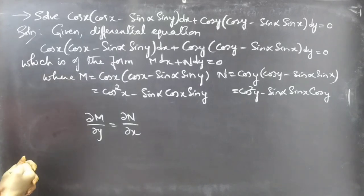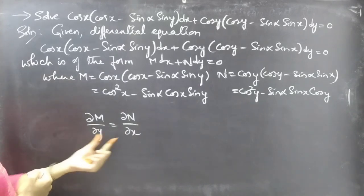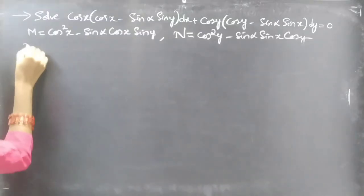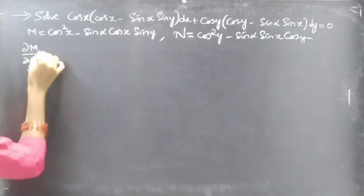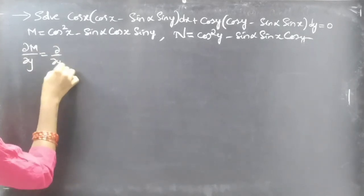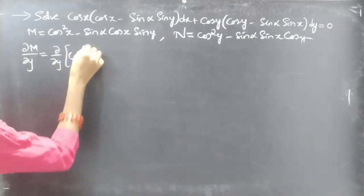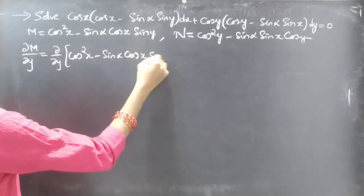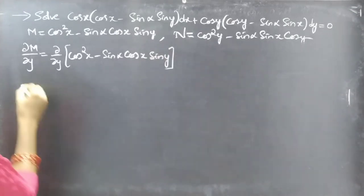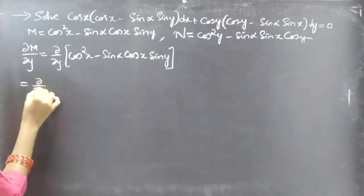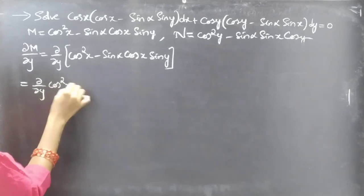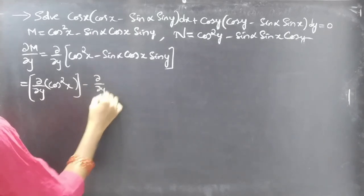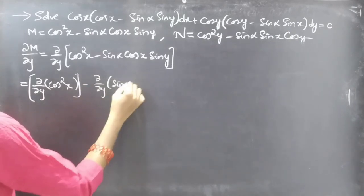So now let's find the partial derivative of M with respect to y. This equals ∂/∂y of cos²(x) - sin(α)cos(x)sin(y), which equals the partial derivative of the first term minus the partial derivative of the second term.